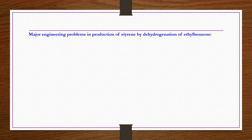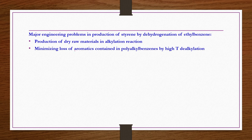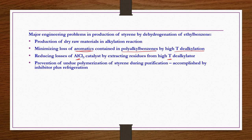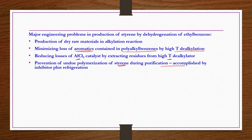Major engineering problems in styrene production by dehydrogenation of ethylbenzene: Benzene as the primary raw material must be very dry for the alkylation reaction. Minimization of loss of aromatic compounds in polyalkylbenzenes by high-temperature dealkylation is essential. Reducing losses of aluminum chloride catalyst by extracting residues from the high-temperature dealkylator is also important. Prevention of undue polymerization of styrene during purification is accomplished by inhibitor addition plus refrigeration — that is why storage is at 10°C or below.